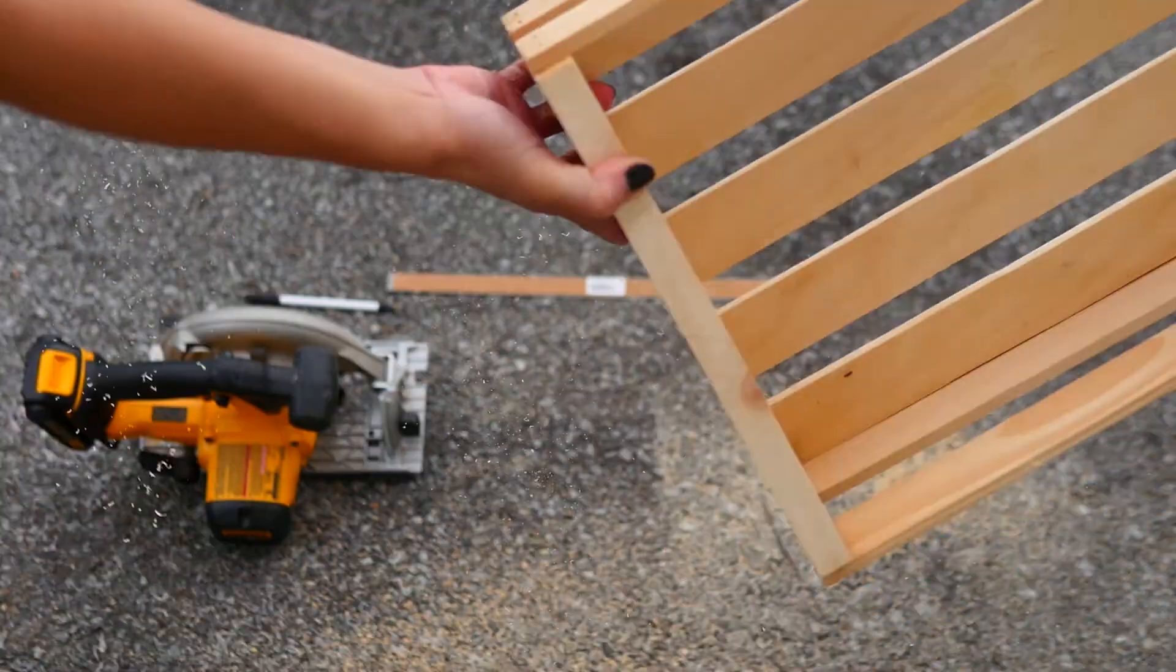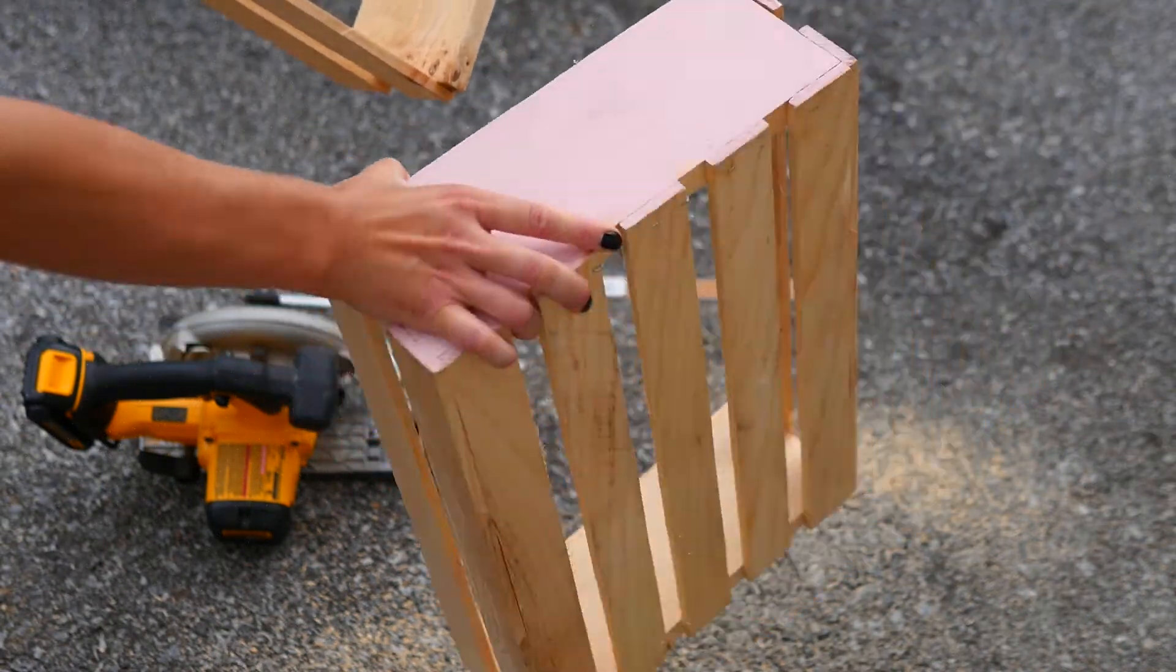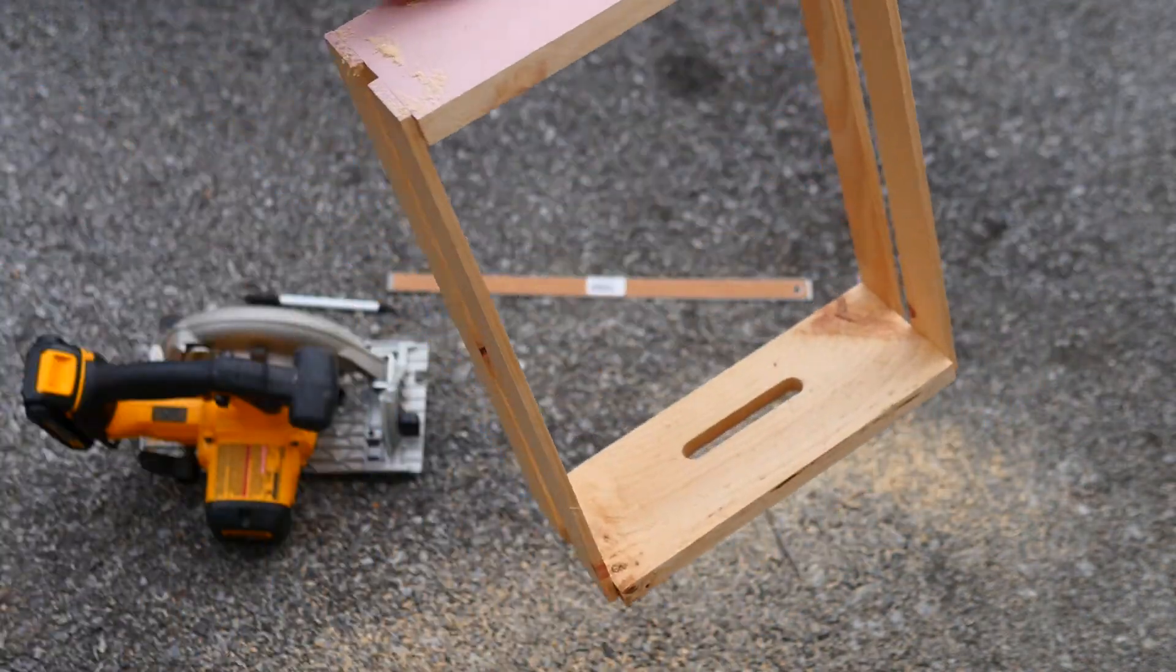You will now have two different boxes: one with slats on the back and one that looks more like a frame.